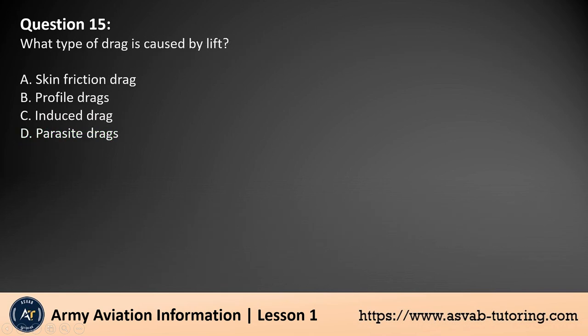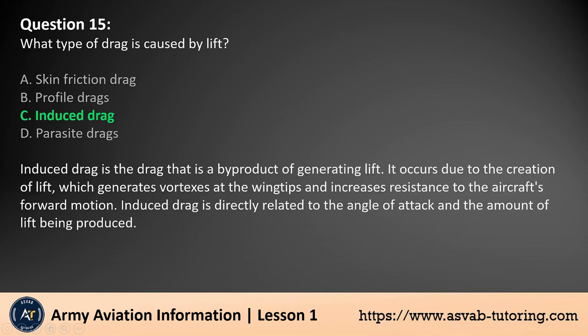Question 15. What type of drag is caused by lift? The answer is C — Induced drag. Induced drag is the drag that is a byproduct of generating lift. It occurs due to the creation of lift, which generates vortexes at the wingtips and increases resistance to the aircraft's forward motion. Induced drag is directly related to the angle of attack and the amount of lift being produced.